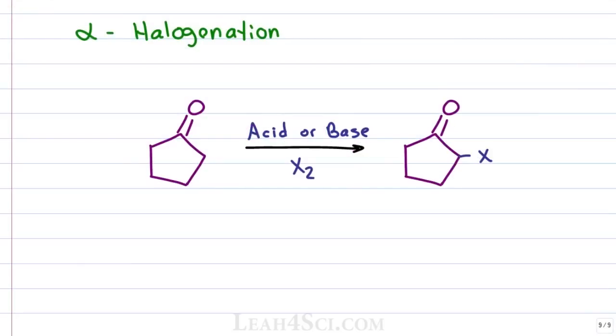Alpha halogenation as the name implies is a halogenation reaction where we add bromine, chlorine or iodine to the alpha position, the carbon directly near the carbonyl compound. This can be carried out under acidic or basic conditions and is a great reaction in your retrosynthesis arsenal because once you have a halogen, you can introduce elimination or substitution to get different reactivity on your molecule.